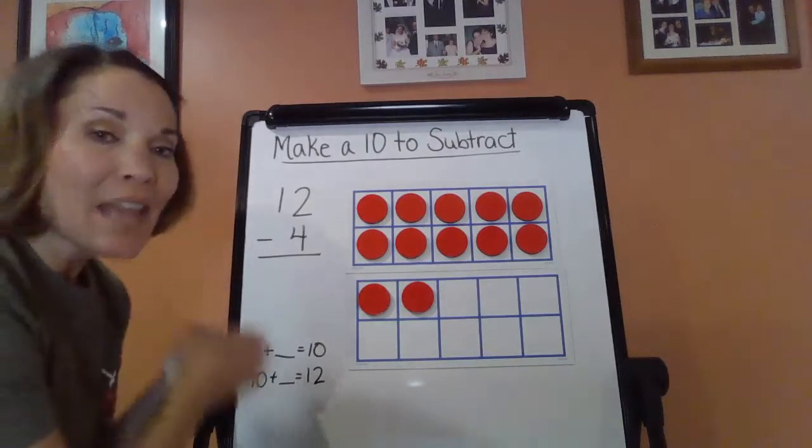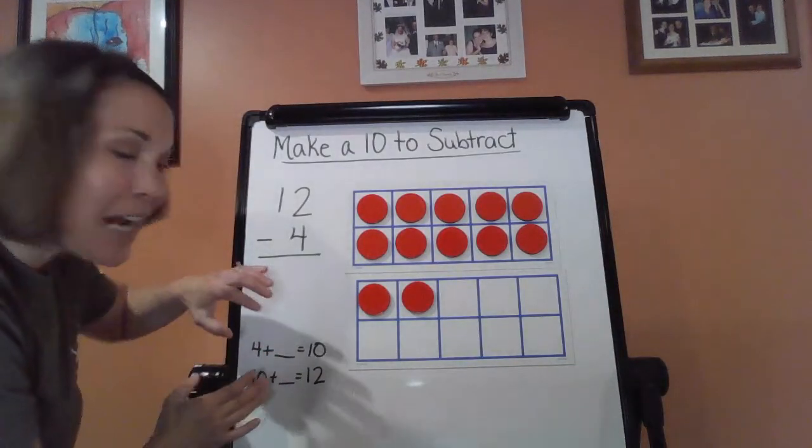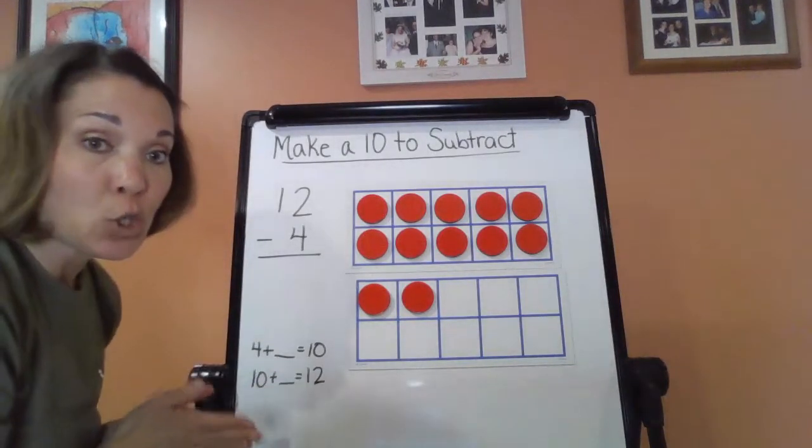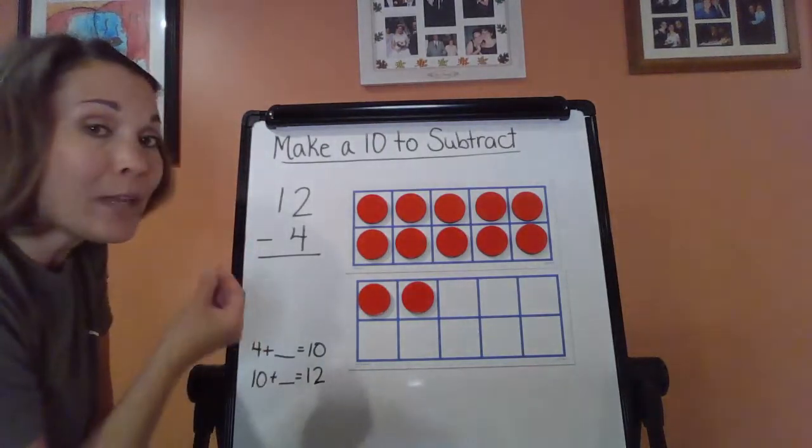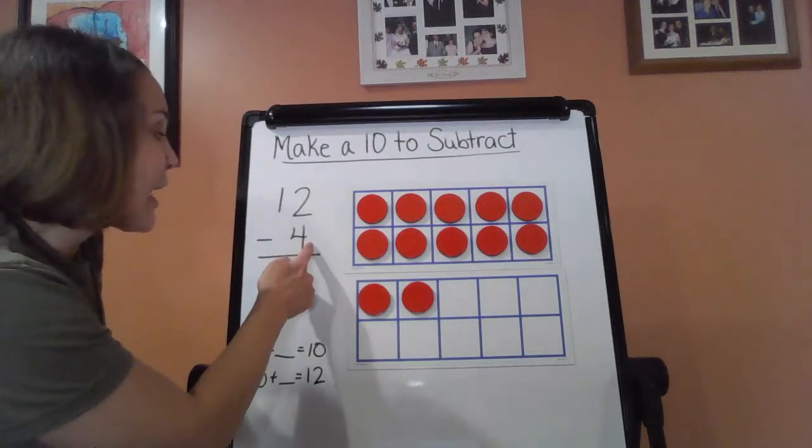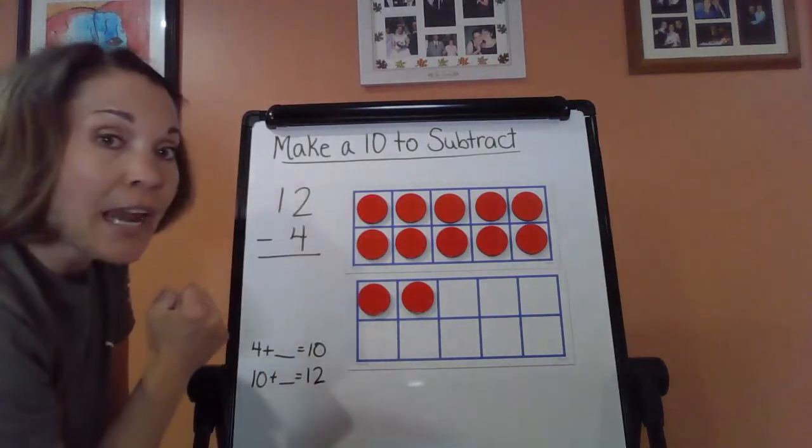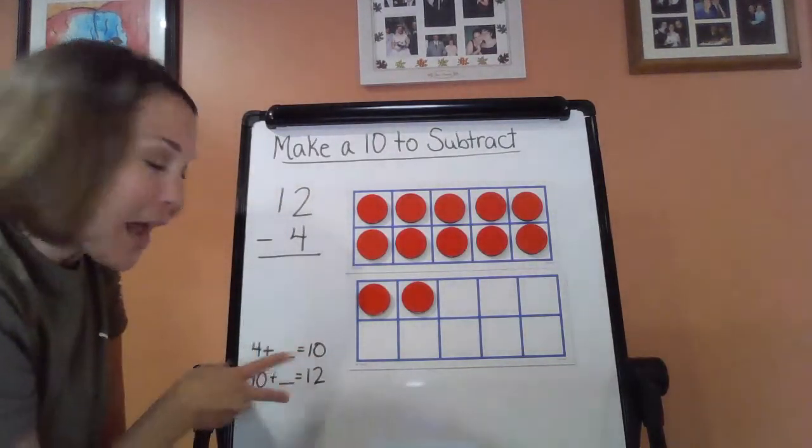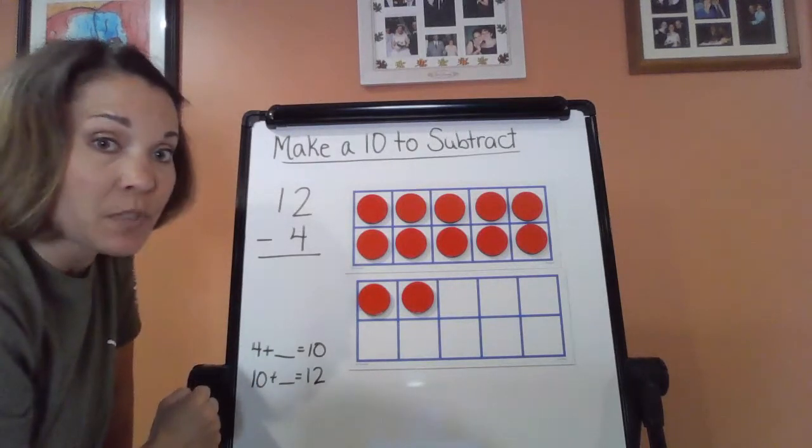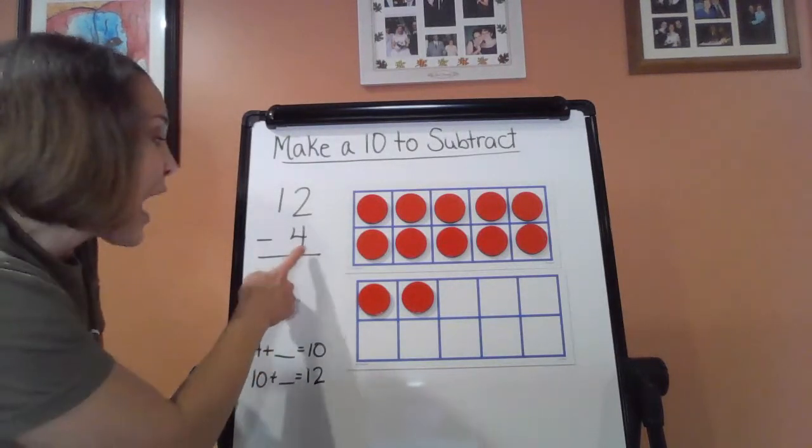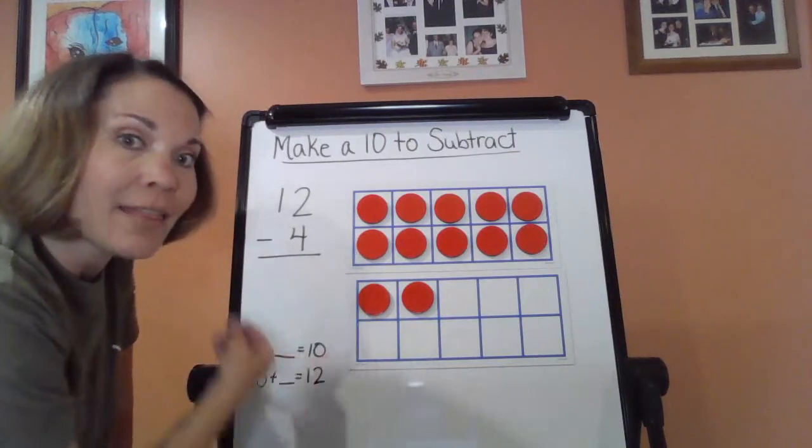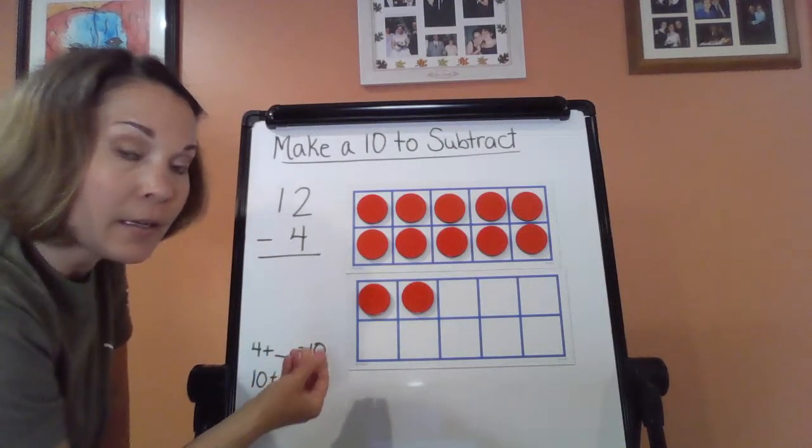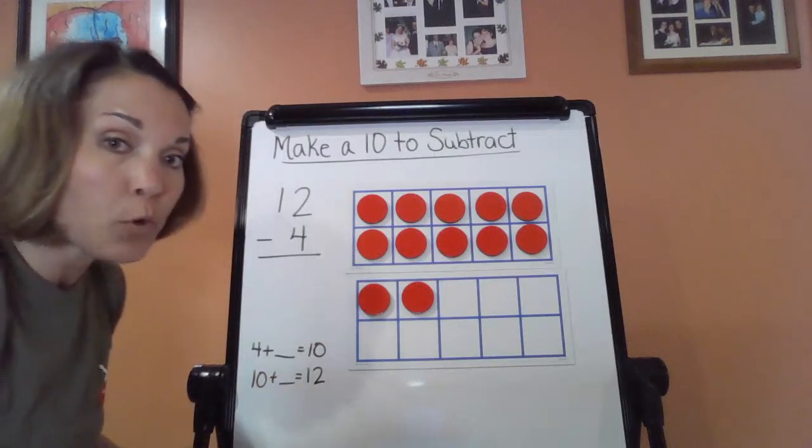So to make a 10, we have to kind of break it down in two ways. What I'm going to do is really in actuality, I want to get from 4 and count on to 12. But in order for me to do that, I'm breaking it down into two steps. First step is, I want to see how many hops to get from 4 to 10. That's essentially making that 10. And then we're going to move on from there.